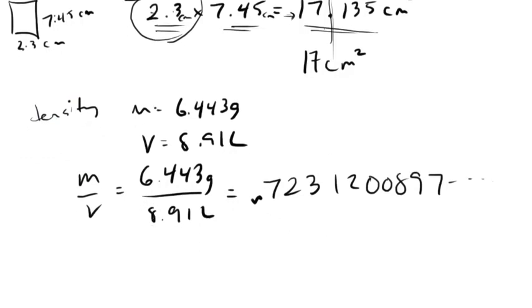Well, we have to say which has the least number of sig figs. Here we get a decimal present, we count from the left: 1, 2, 3, 4. Here decimals present, count from the left: 1, 2, 3. So this number only has 3, this one has 4, so that means our answer has to have 3 sig figs.